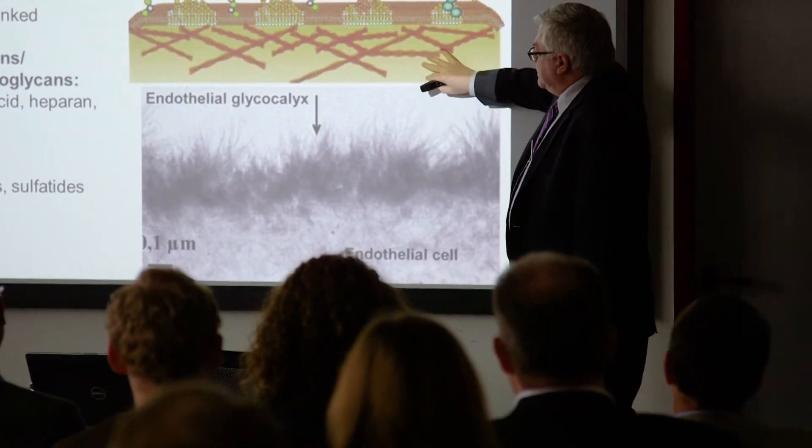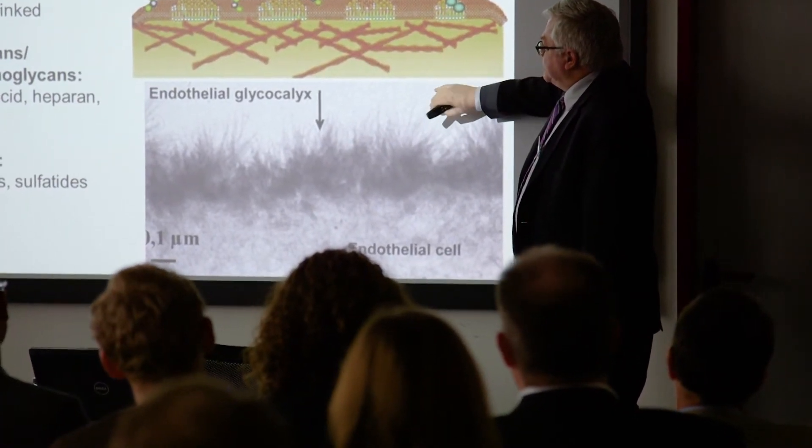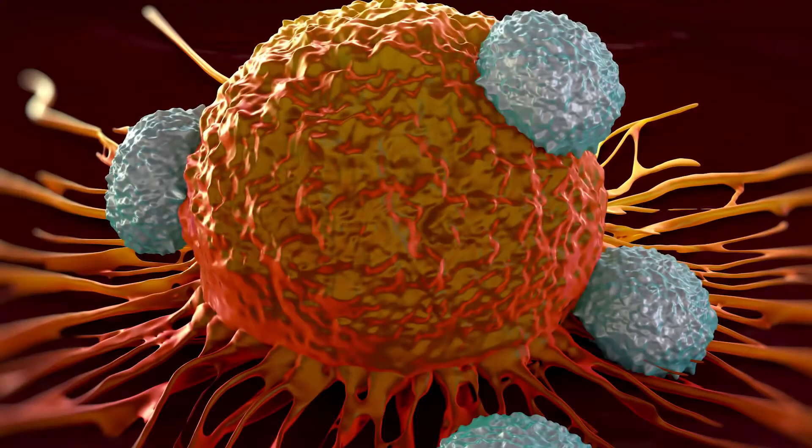Every cell is surrounded by essentially this glycan coat that's in the extracellular matrix that holds cells together and holds other cell types together. It's a critical feature, and so when we're looking in these tumor tissues we're essentially looking at the glycocalyx of the tumor and everything surrounding it.